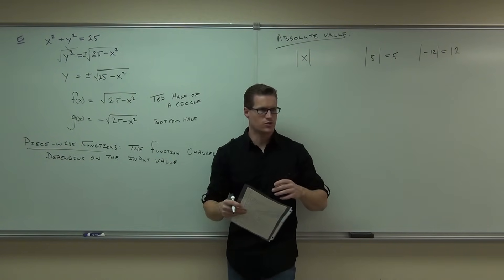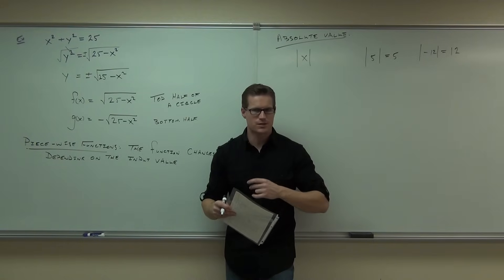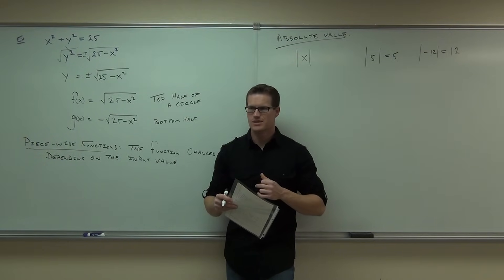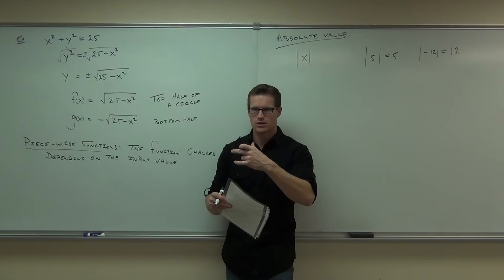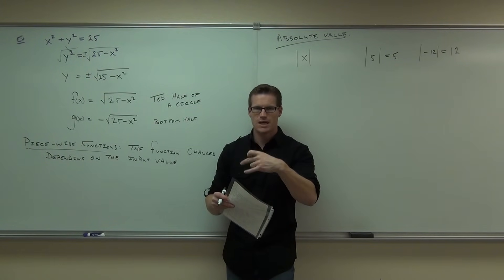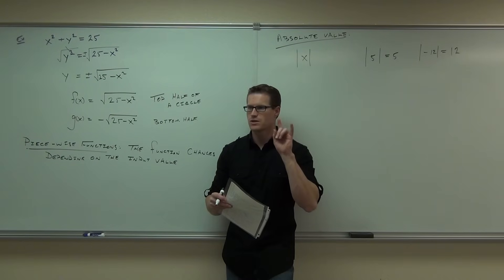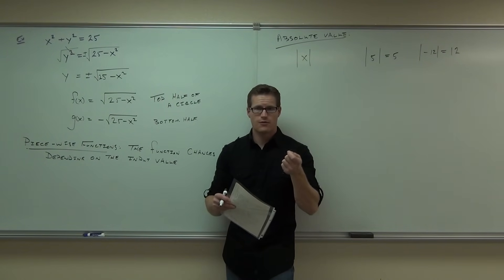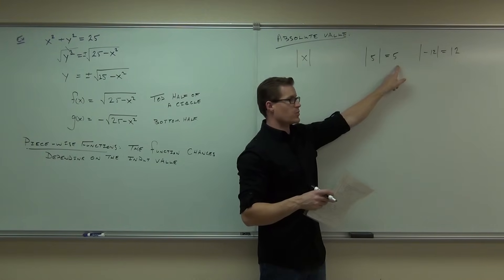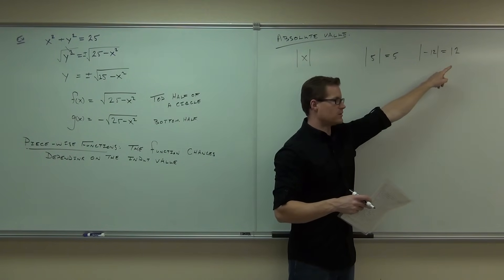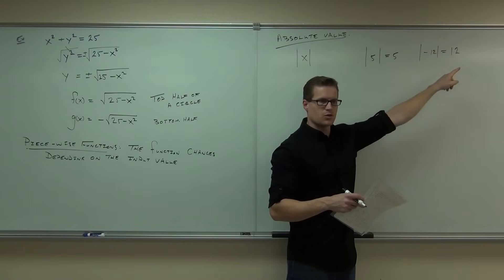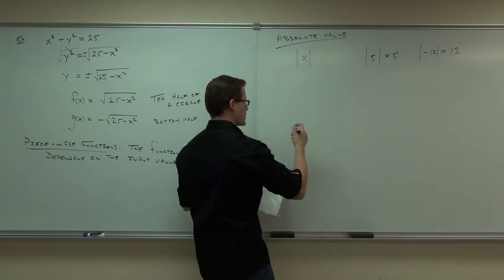You actually have to describe absolute value in two parts: if the number is positive, it doesn't change. If the number is negative, it changes the sign. So this function does two different things depending on the value of x — if x is positive, leave it alone; if x is negative, change the sign. That means we can define it as a piecewise function.